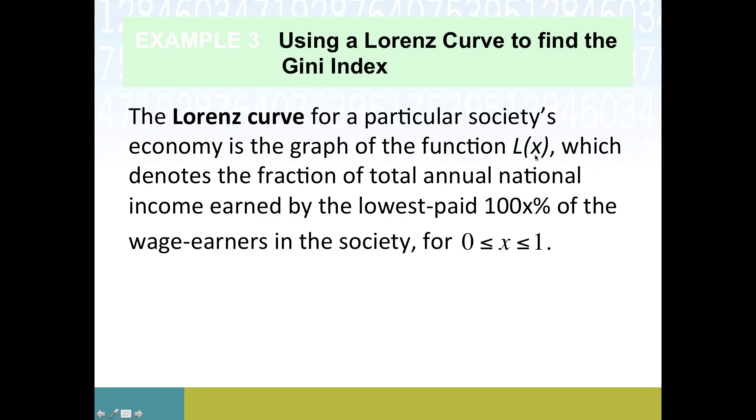Let's just say what we get out as an answer is 0.1. So that would mean that 10 percent of the wealth, that is the output of our Lorenz curve, was controlled by 40 percent, the lowest 40 percent of our wage earners.